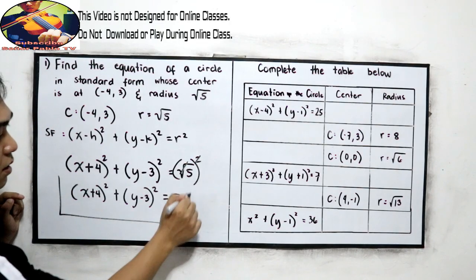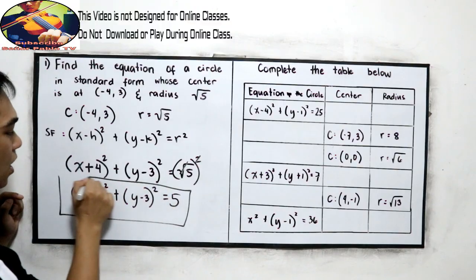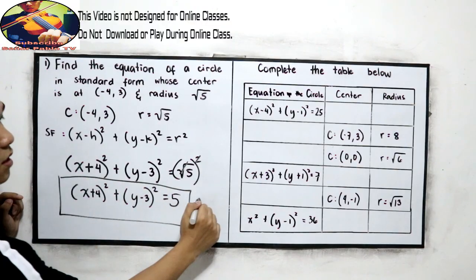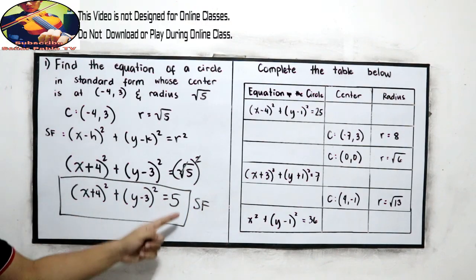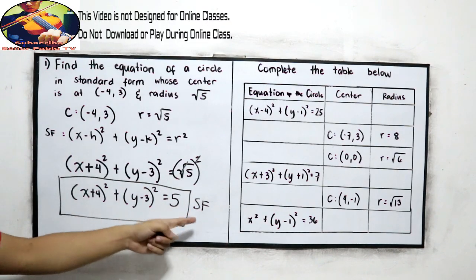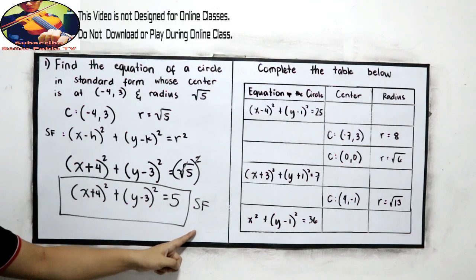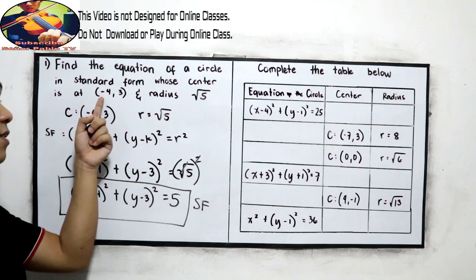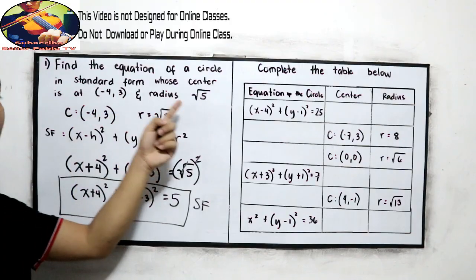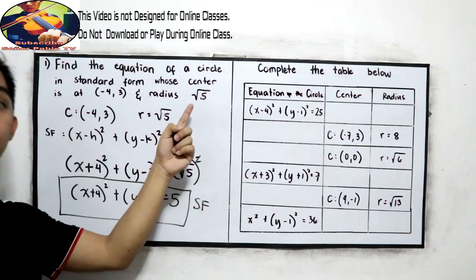Our final answer is (x plus 4) squared plus (y minus 3) squared is equal to 5, since the square root and the square cancel out. This is the standard form of our circle given the center and the radius.